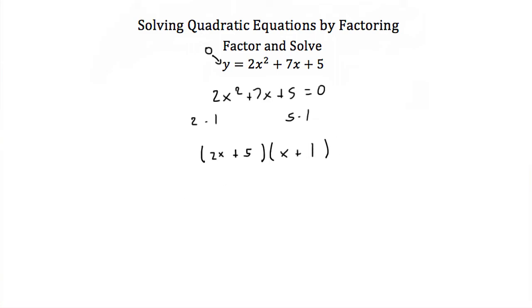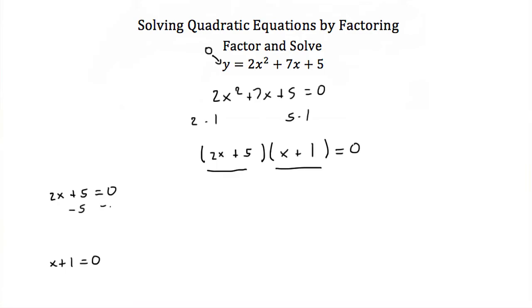Now remember, this is all equal to zero. So here I have 2x squared plus 7x plus 5 in factored form. And since it's set equal to zero, I'm going to use the zero product property and set each one of these binomials equal to zero. I'll have 2x plus 5 is equal to zero, and x plus 1 is equal to zero. Now for this first equation, I'll subtract 5 from both sides. I get 2x is equal to negative 5. Divide by 2 on both sides and I get x is equal to negative 5 halves.